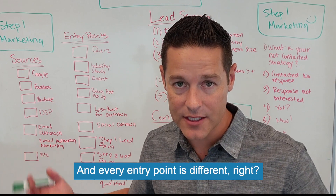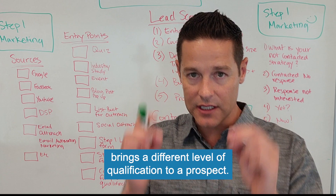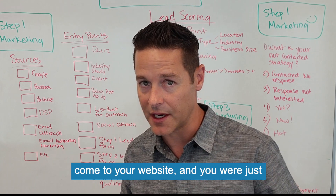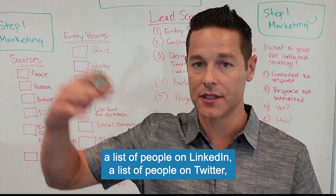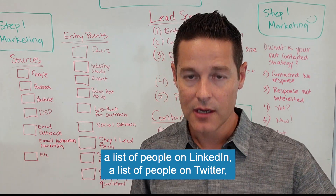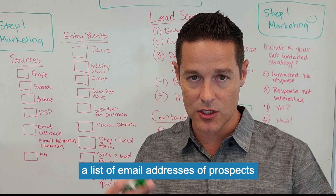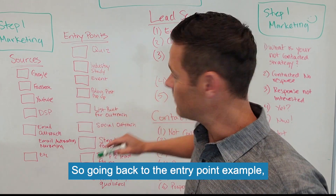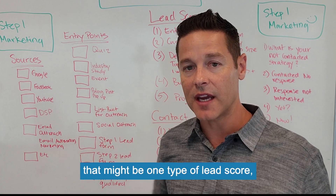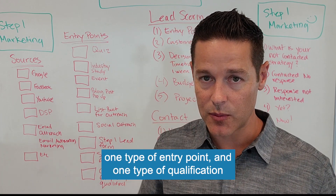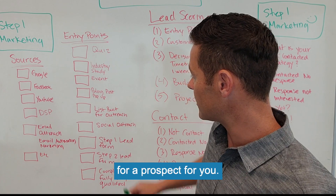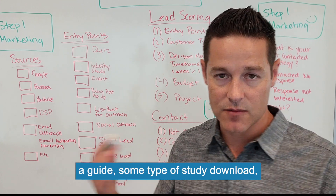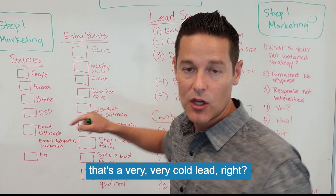Every entry point is different — every entry point on your website brings a different level of qualification to a prospect. In addition, if they've never come to your website and you're just building a list — a list of people on LinkedIn, Twitter, or email addresses of prospects you want to reach out to — that is also a different level of qualification. A quiz, industry study, or event might be one type of lead score, while somebody who comes in through a random blog post pop-up is a very, very cold lead.